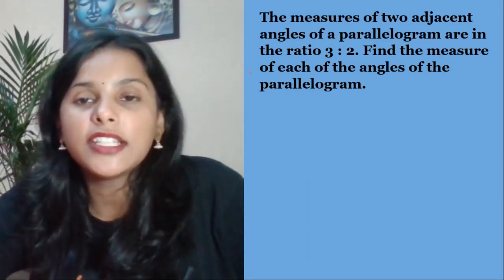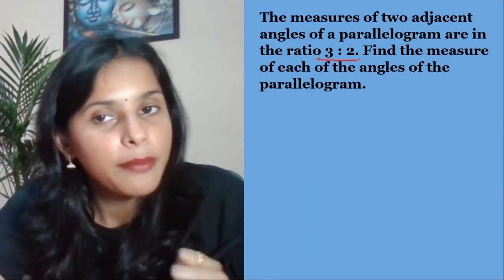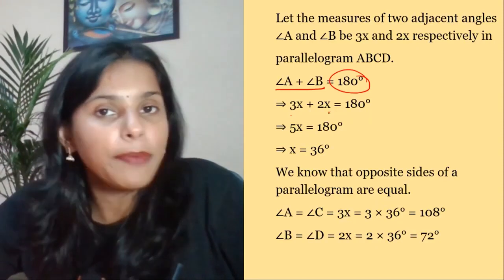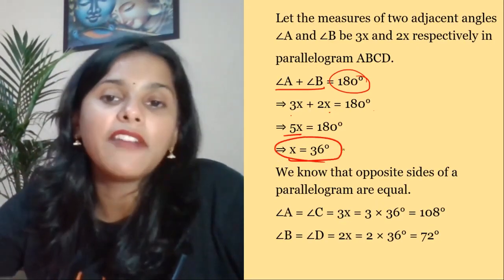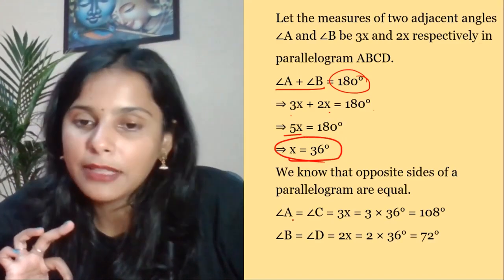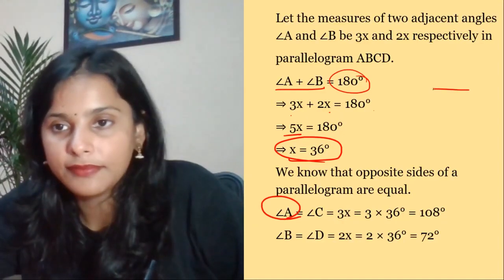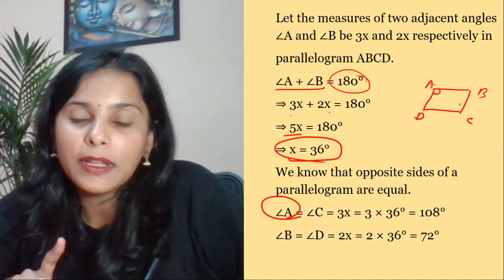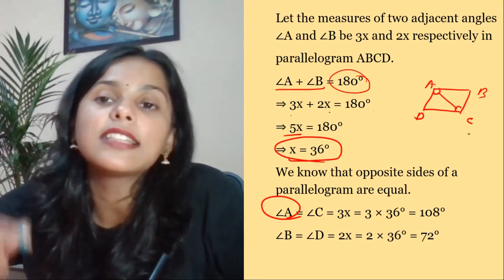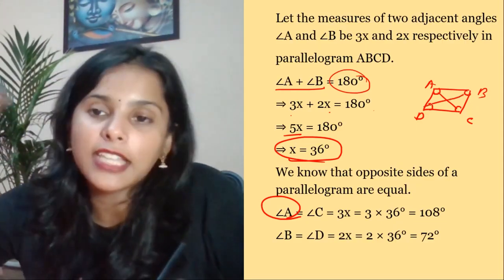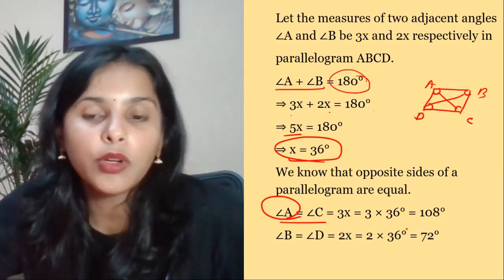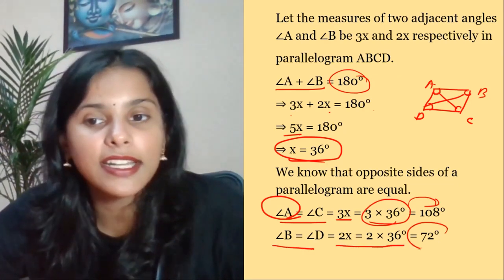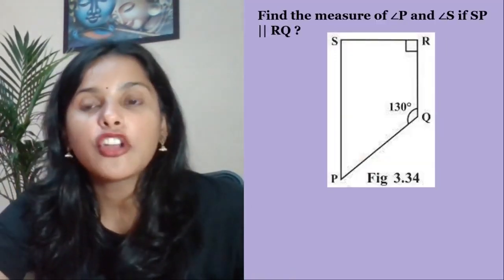Question 2: The measures of two adjacent angles of a parallelogram are in the ratio 3:2. Find the measure of each angle. Since A and B are adjacent angles in a parallelogram, they are supplementary: 3x + 2x = 180, so 5x = 180, x = 36. Angle A = 3x = 108 degrees, angle B = 2x = 72 degrees. Since opposite angles are equal, angle C = 108 and angle D = 72 degrees.